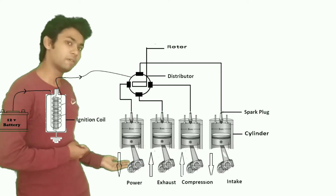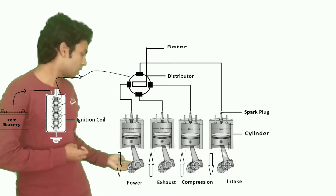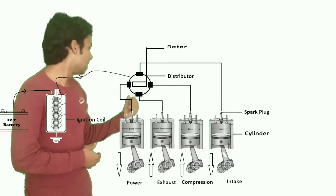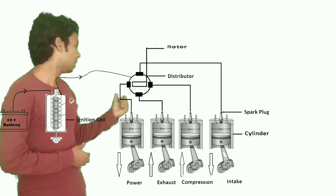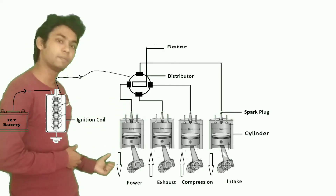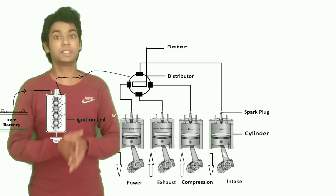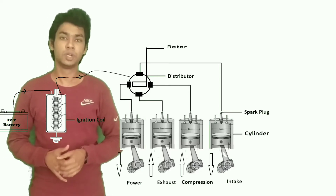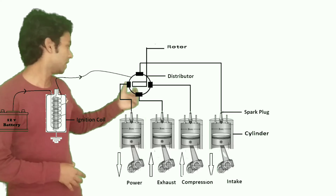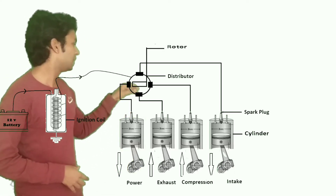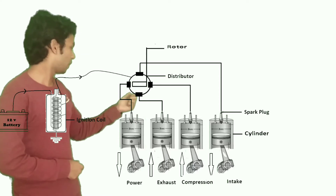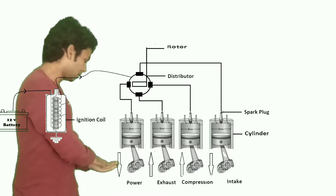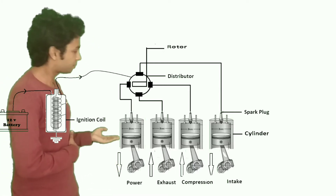The first cylinder will be in the power stroke, the second in the exhaust stroke, the third in the compression stroke, and the final one in the intake stroke. When the rotor comes in contact with the first contact breaker, a high voltage current signal is triggered, corresponding to the cylinder in the power stroke. The firing sequence in the IC engine is always 1-3-4-2. So when the rotor comes in contact with the first contact breaker, the current signal reaches the first cylinder, which is in the power stroke.